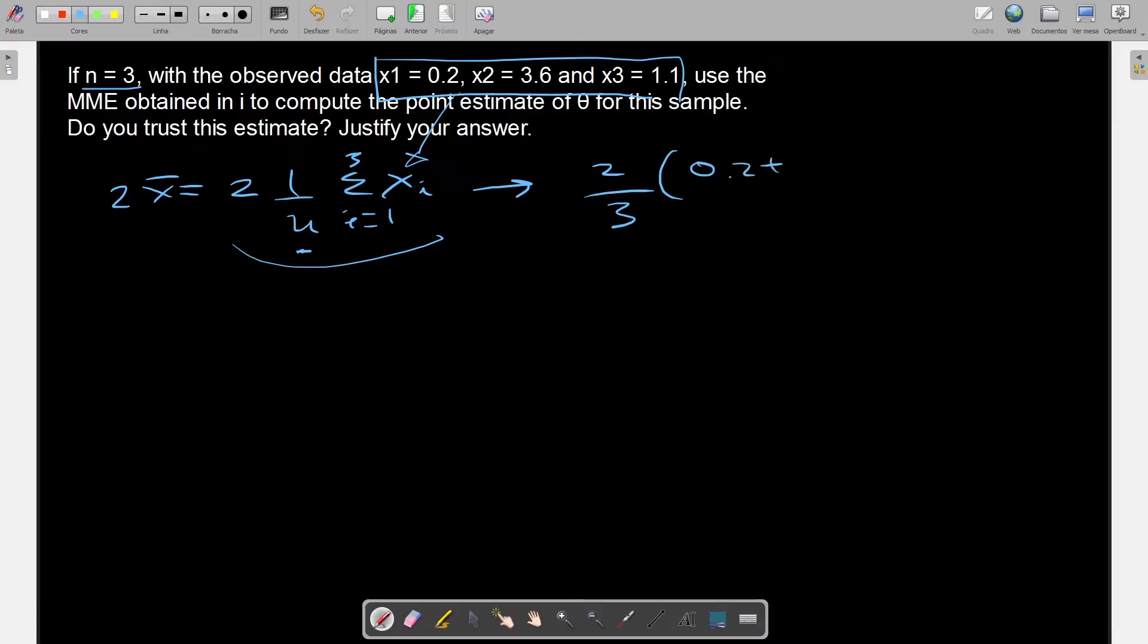it's 0.2 plus 3.6 plus 1.1. And this total expression is 2 divided by 3, so 0.2 plus 3.6 is 3.8, plus 1.1 is 4.9.